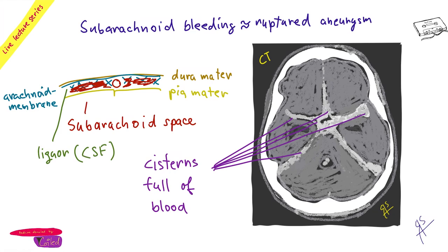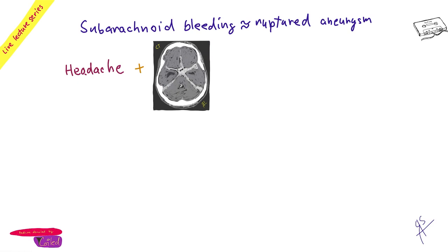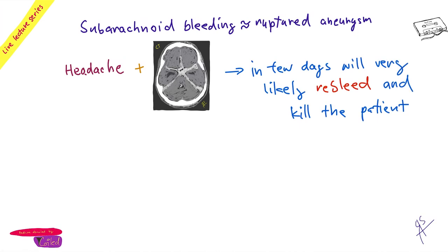If a patient presents with severe pain, look at the CT for blood in the basal cisterns. Even a partial finding is significant — it very likely indicates an aneurysm. This is critical: blood irritates vessels, and within a few days massive vasoconstriction can lead to an ischemic stroke. Additionally, within one week the aneurysm typically re-ruptures.